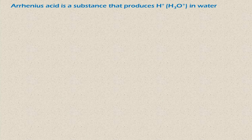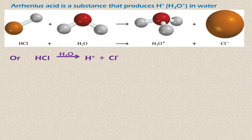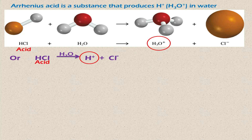An Arrhenius acid is a substance which produces hydrogen ions or H₃O⁺ hydronium ions in water. For example, HCl is dissolved in water and it converts into H₃O⁺ hydronium ion and Cl⁻ chloride ion. Alternatively, HCl simply breaks down in water to give H⁺ ion and Cl⁻ ion. H₃O⁺ or H⁺ ions are produced in water, which means HCl is an acid because it gives H⁺ or H₃O⁺ ions in water. So according to Arrhenius' definition, HCl is an acid.